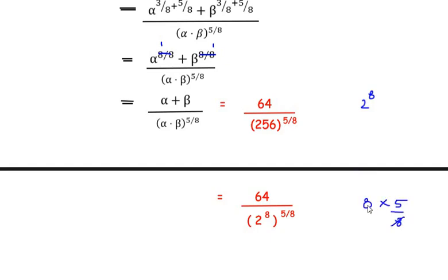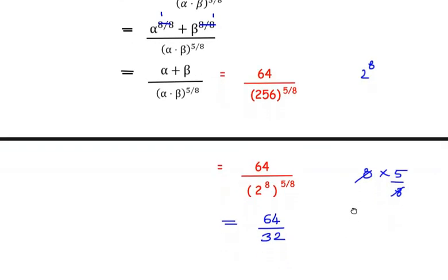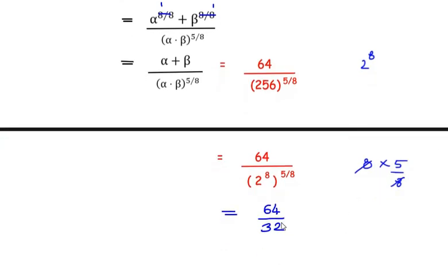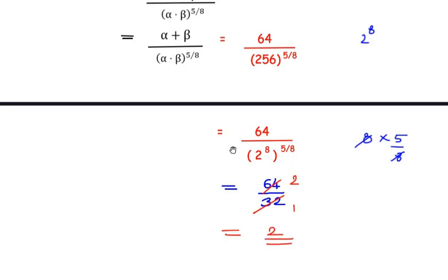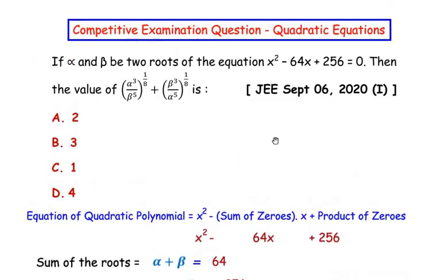Applying the laws of indices, we multiply the powers: 8 × (5/8) — the 8s cancel — leaving 2^5 = 32. So we have 64 / 32. Since 32 × 2 = 64, the final answer simplifies to 2.